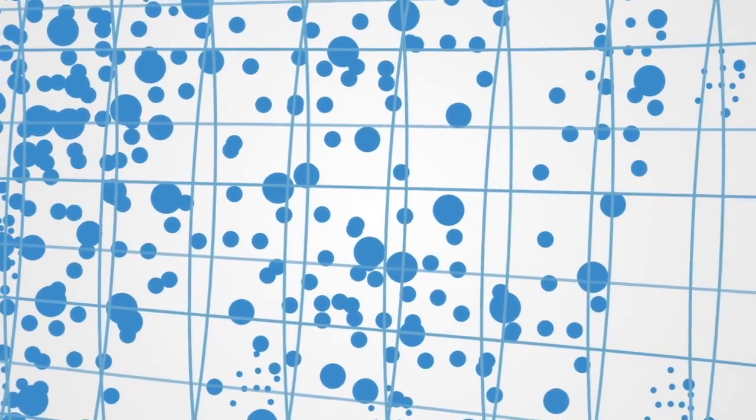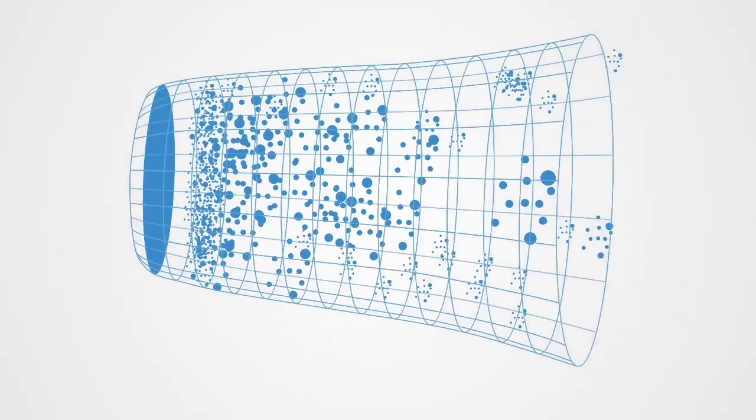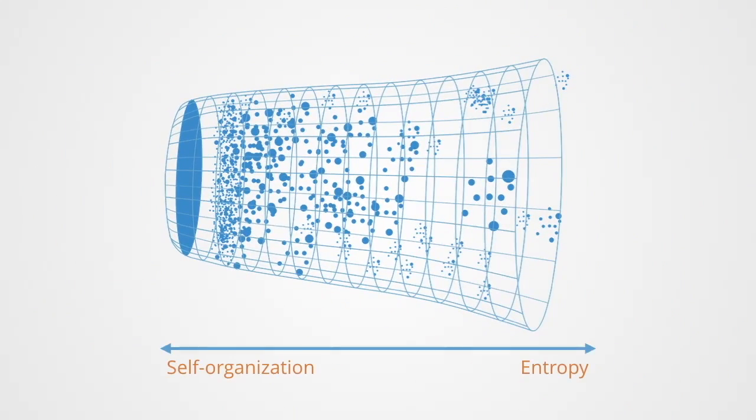Self-organization is defined formally in terms of a decrease in statistical entropy in the system. Entropy is a measure of the number of degrees of freedom a system has on the micro level. Without correlation between the states of elements, the state of each element is determined independently, thus degrees of freedom go up, disorder goes up, and entropy likewise goes up.